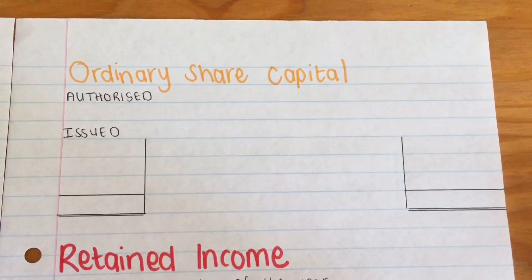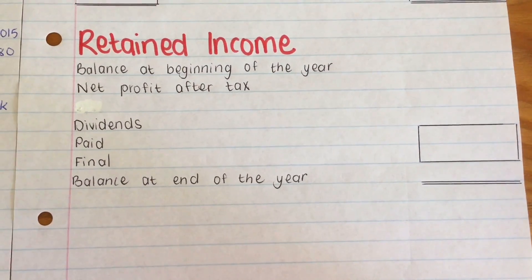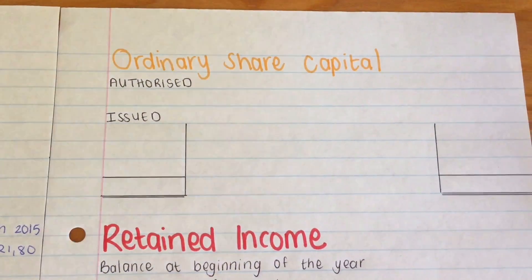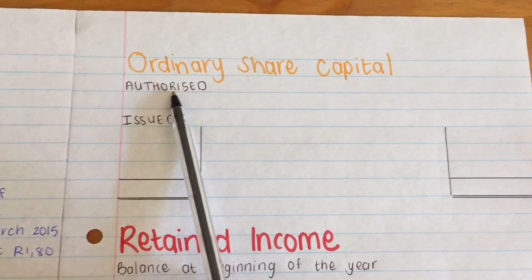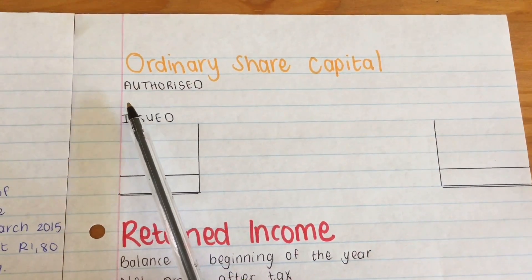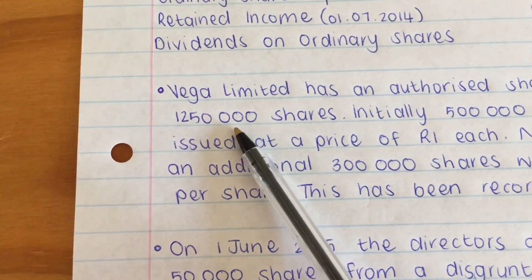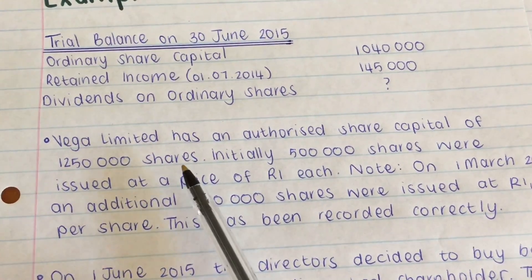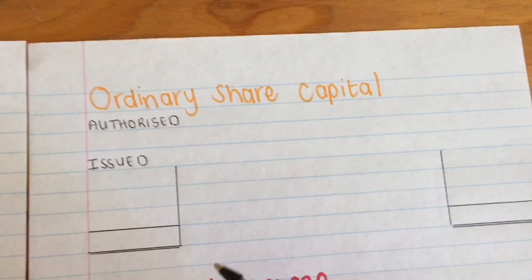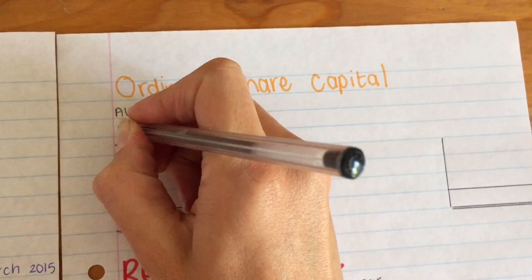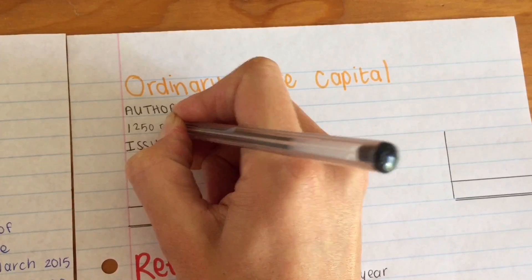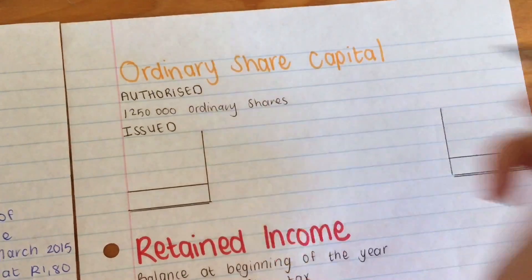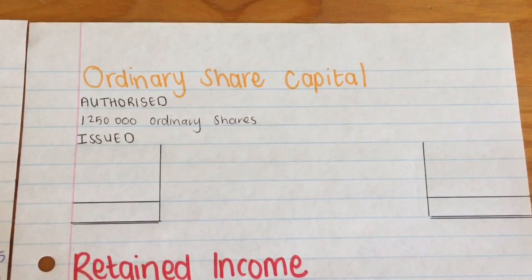We are going to do the Ordinary Share Capital note and the Retained Income note. To start with the Ordinary Share Capital note, I've got two headings: Authorized and Issued. Under Authorized, I'm just going to enter the 1.25 million shares authorized to be issued by the company. No rand amounts — I just write 1,250,000 ordinary shares. That's it; that's just telling us what we can work with.